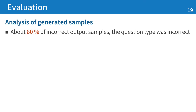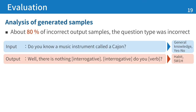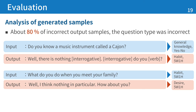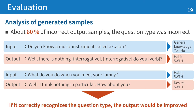We analyzed the generated samples and found that in about 80% of incorrect output samples, the question type was incorrect. For example, the input question 'Do you know a music instrument called a cajon?' is general knowledge type with yes-no form, but the output frame belongs to habit type with WH-question form. And the question 'What do you do when you meet your family?' is habit type, but the output frame belongs to desire type. So we thought correct question type information would improve the output.